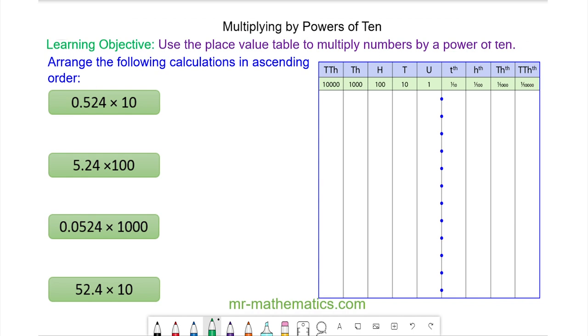Okay, so we have 0.524, we're multiplying it by 10, so we move one place, so it becomes 5.24.